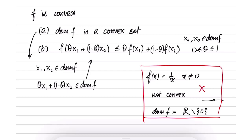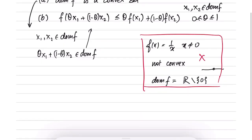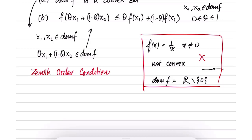This condition is called the zeroth order condition, because it only depends on the function values at certain points and does not depend on the derivative or Hessian of the function.